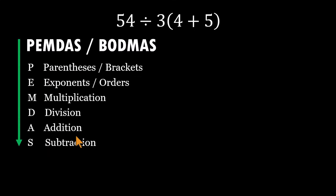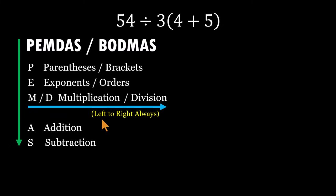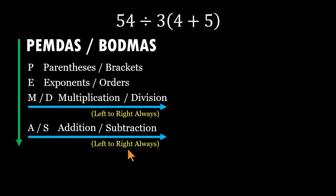But here's the crucial detail many forget. Multiplication and division sit on the same tier. Neither one outranks the other. So when they appear next to each other, we simply work from left to right. Just like reading a sentence, the same rule holds for addition and subtraction. Equal priority left to right always.